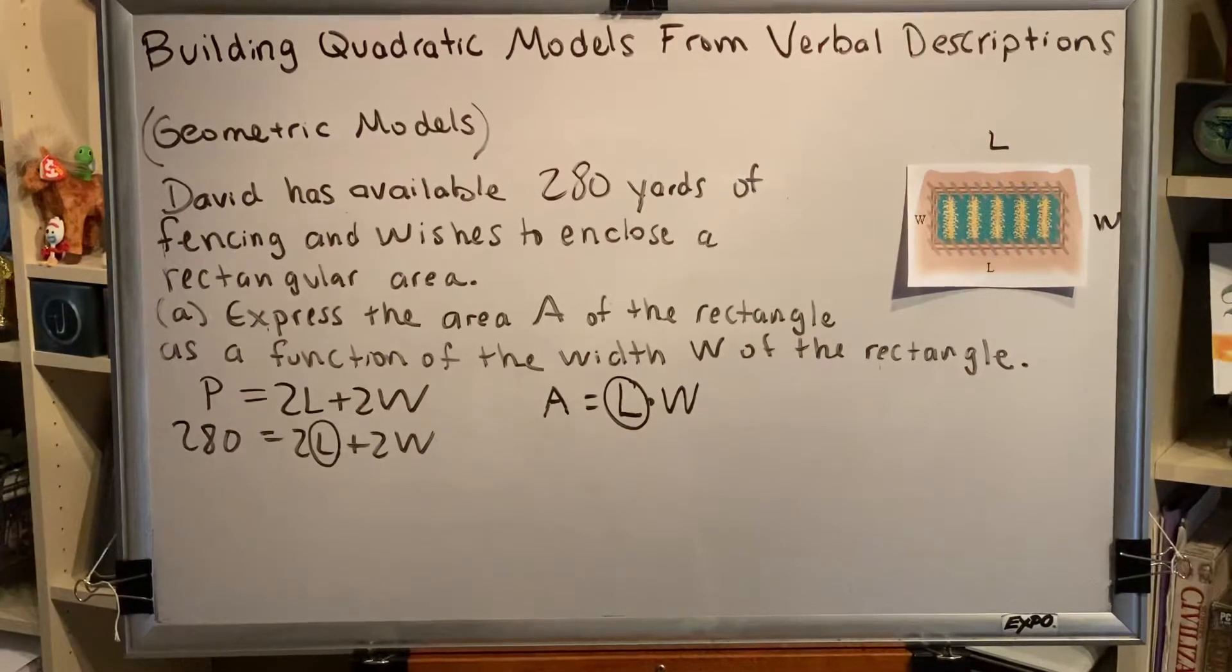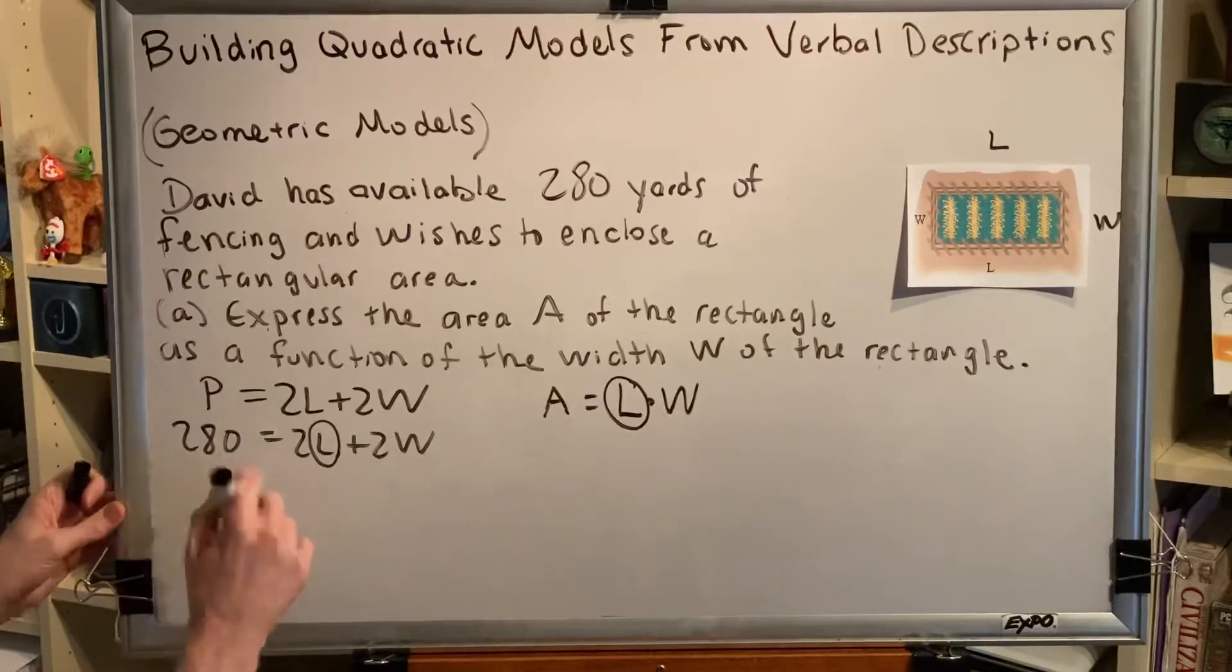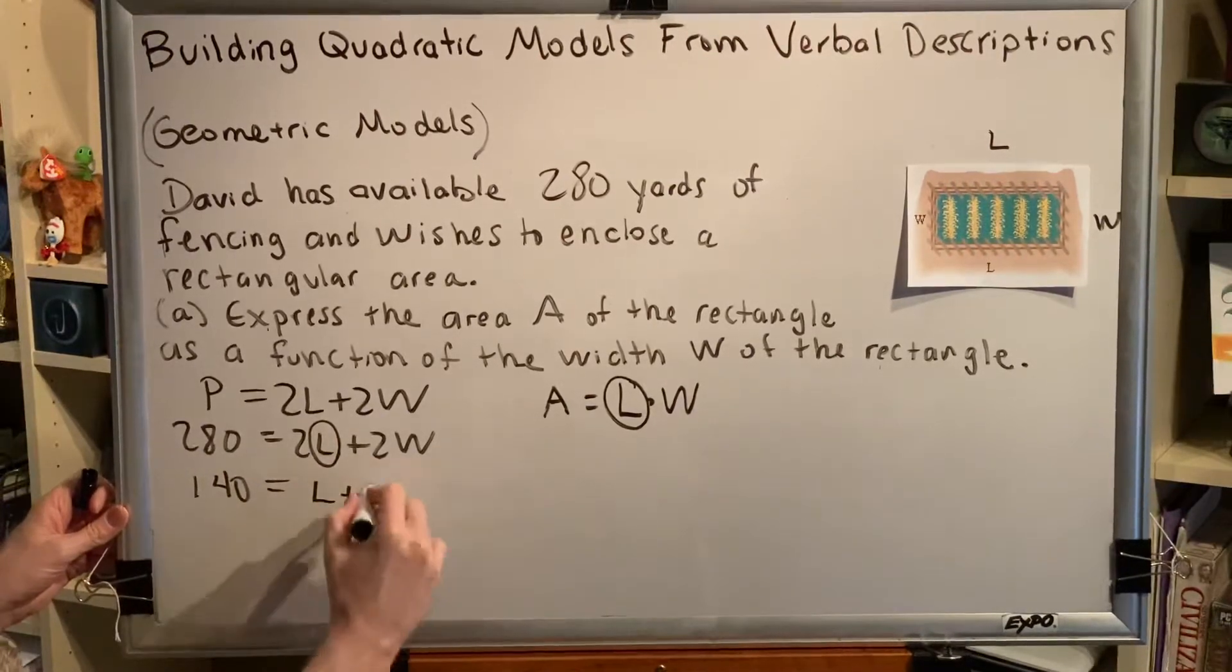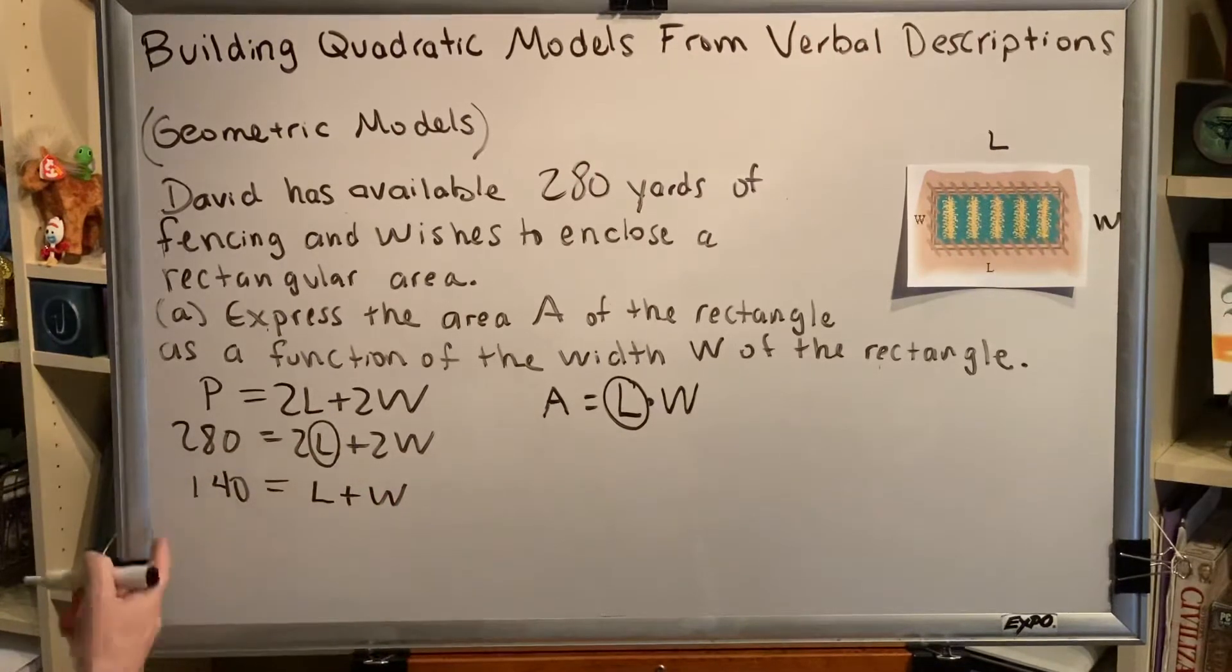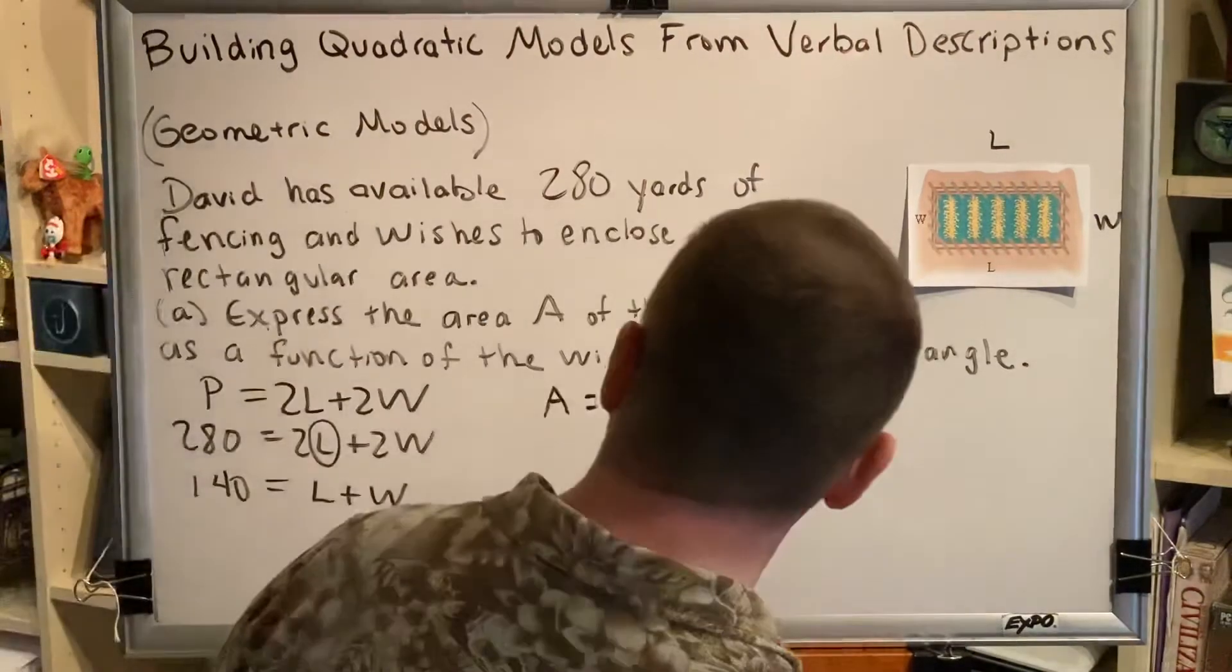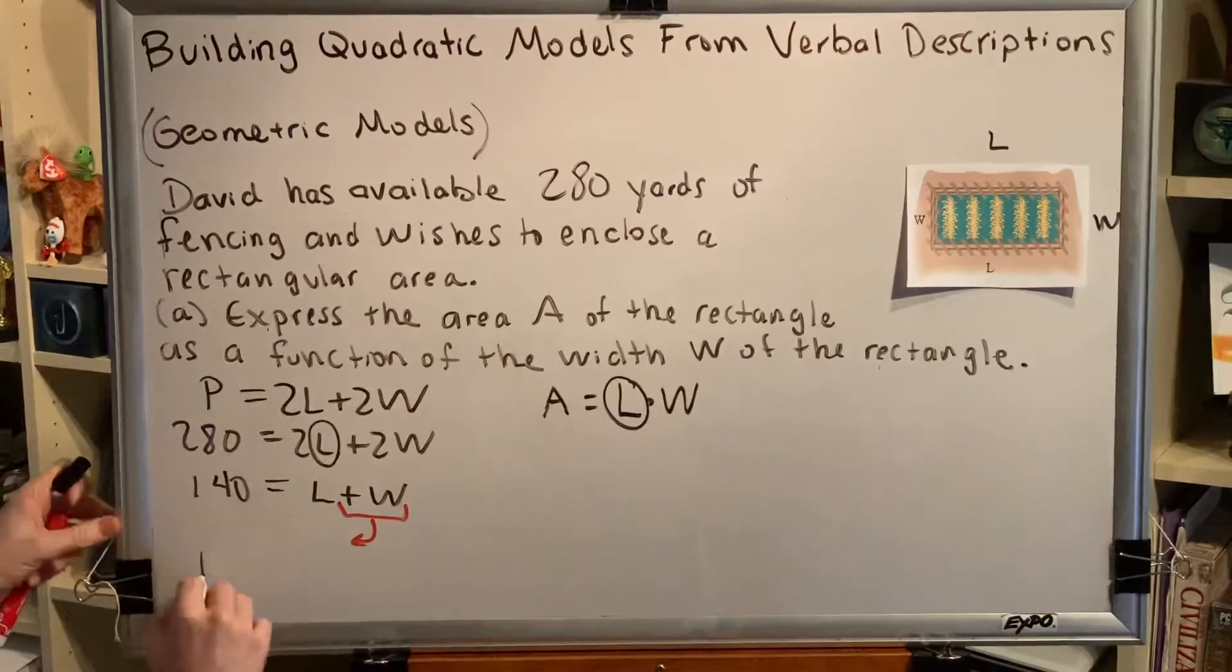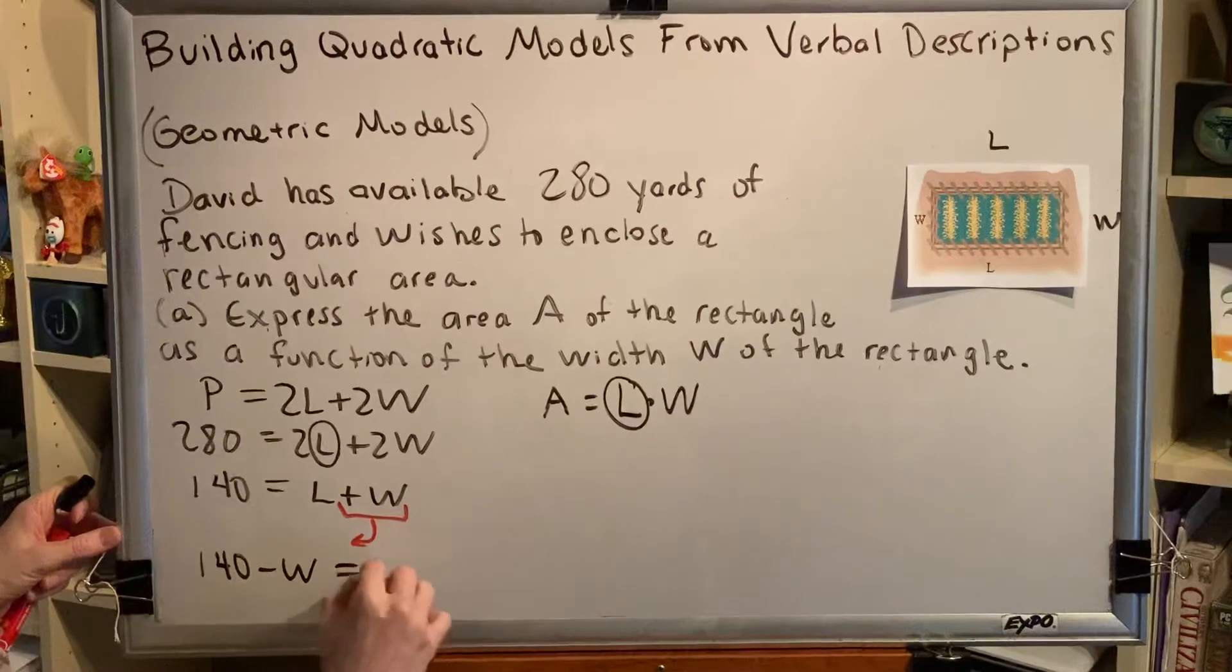Let's see if we can achieve this. First thing we're going to do is divide everything by 2. So 280 divided by 2 is 140. 2L divided by 2 is just L. 2W divided by 2 is just W. So if 280 equals 2L plus 2W, then 140 equals L plus W. Next, we're going to move this W to the other side with subtraction, and so that's going to give us the statement 140 minus W equals L.